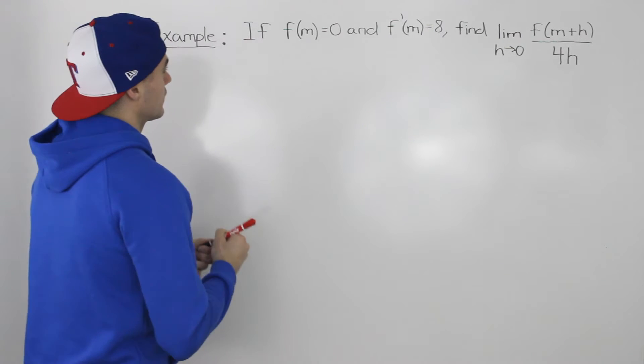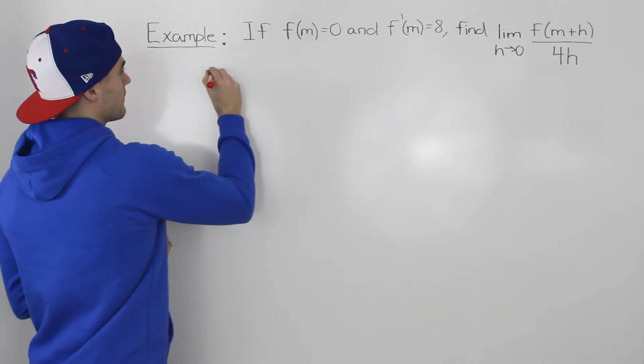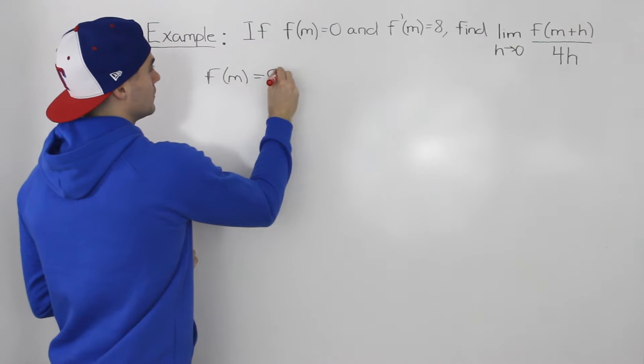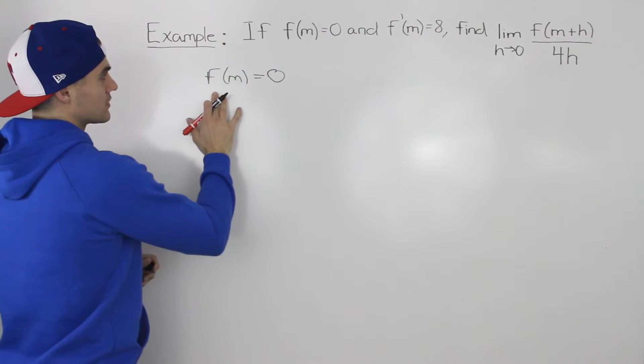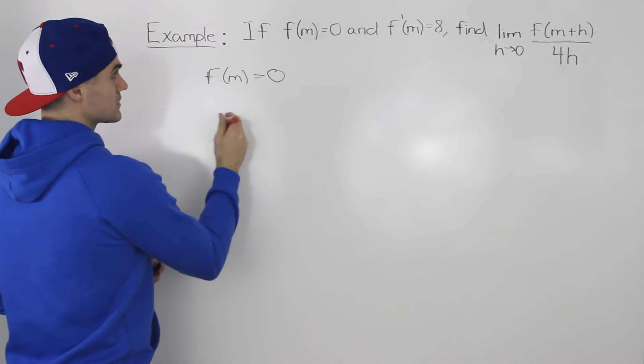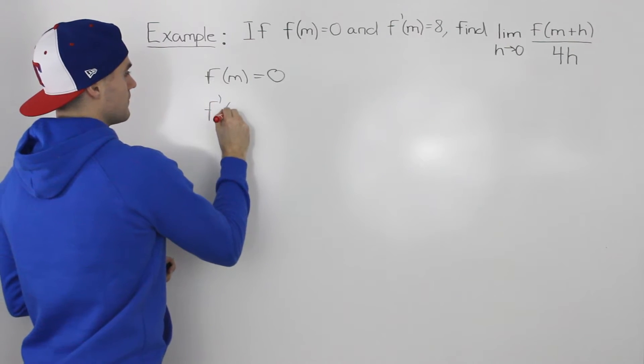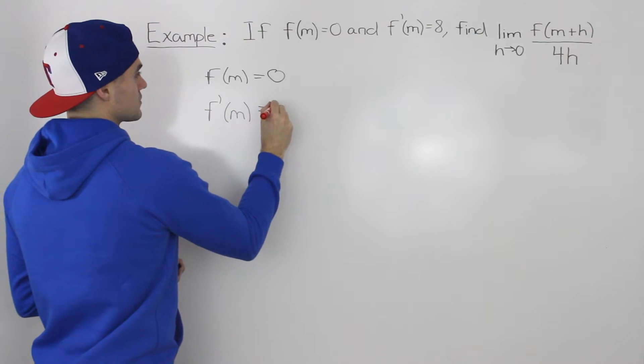So let's see what we're given here. We're given that f of m is equal to 0. Okay, that's pretty standard, so that's not much help to us. And we're also given that f prime m is equal to 8.